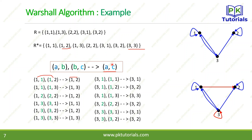You can see that we have transitive closure. For example, 1→2 is present and 2→3 is present, so 1→3 is present. If we have 1→3 and 3→2, then 1→2 is available. So we have transitive closure — all paths are available.